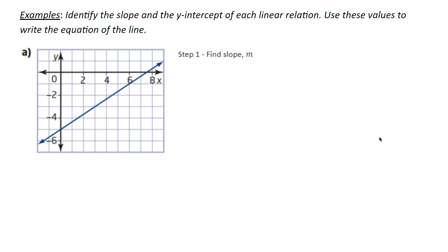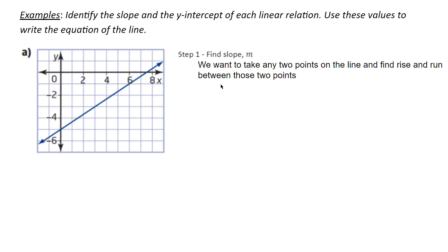We want to identify the slope and the y-intercept of each linear relation and use these values to write the equation of the line. We're going to find our slope by taking any two points on the line and finding the rise and run between these two points.